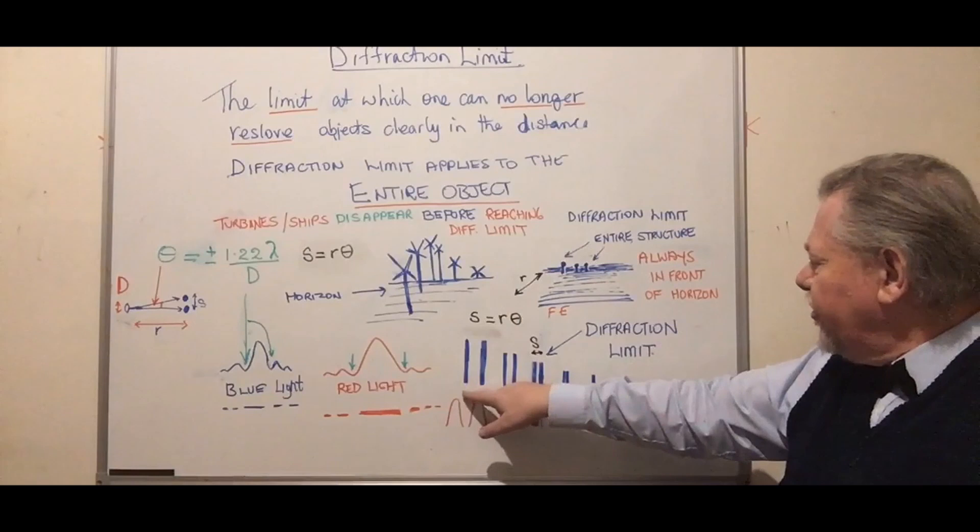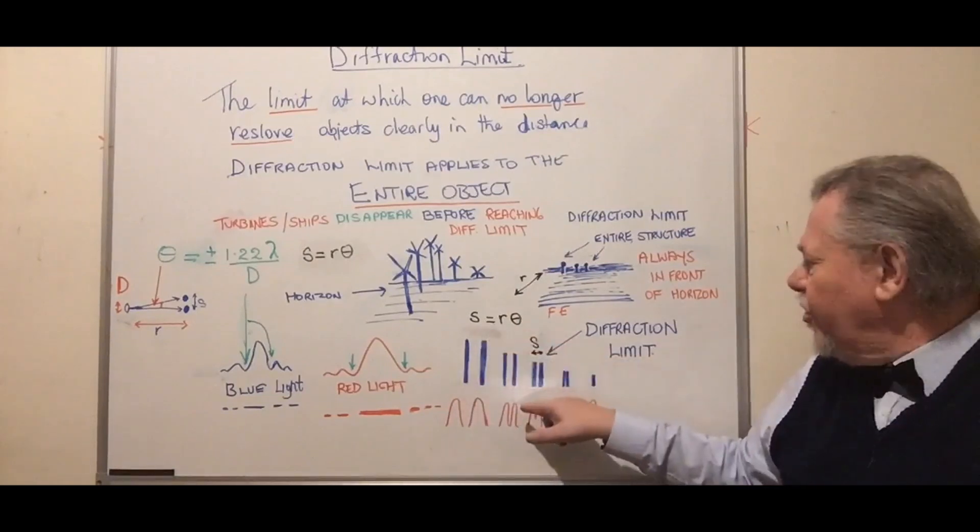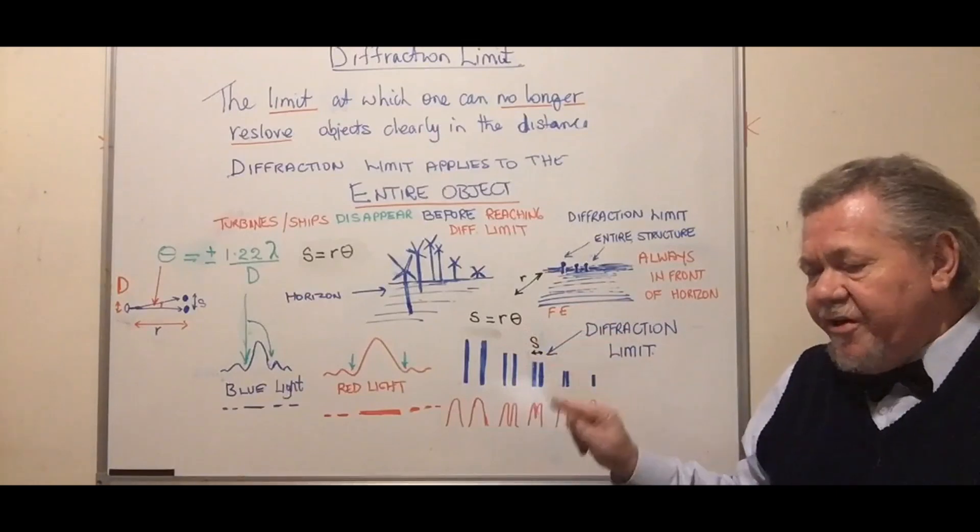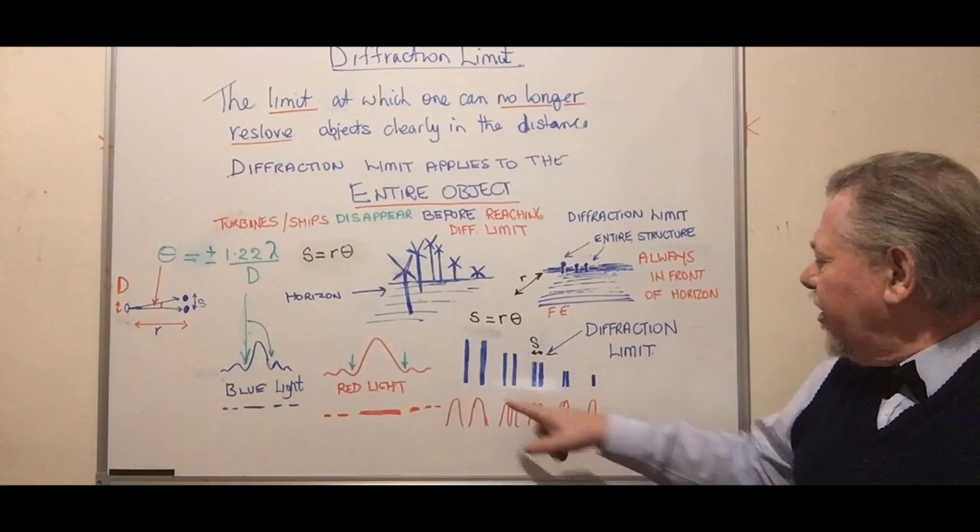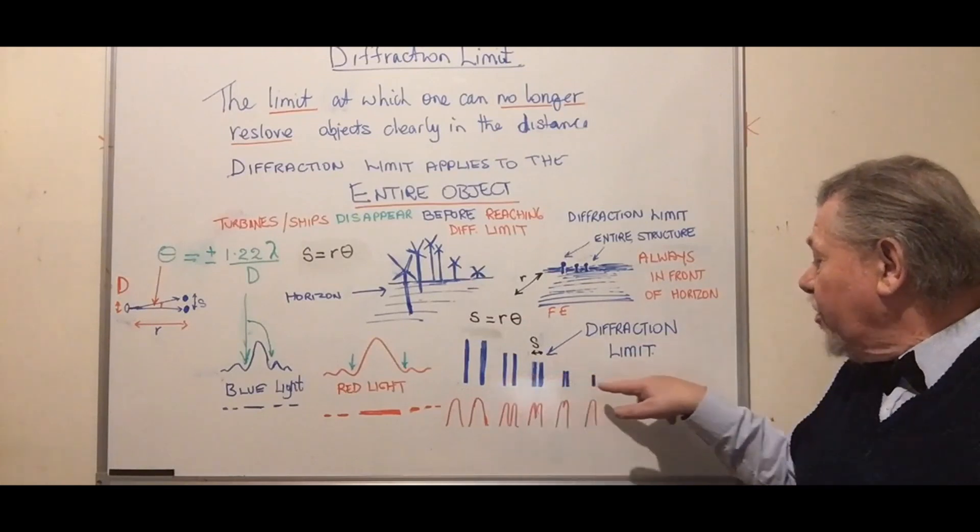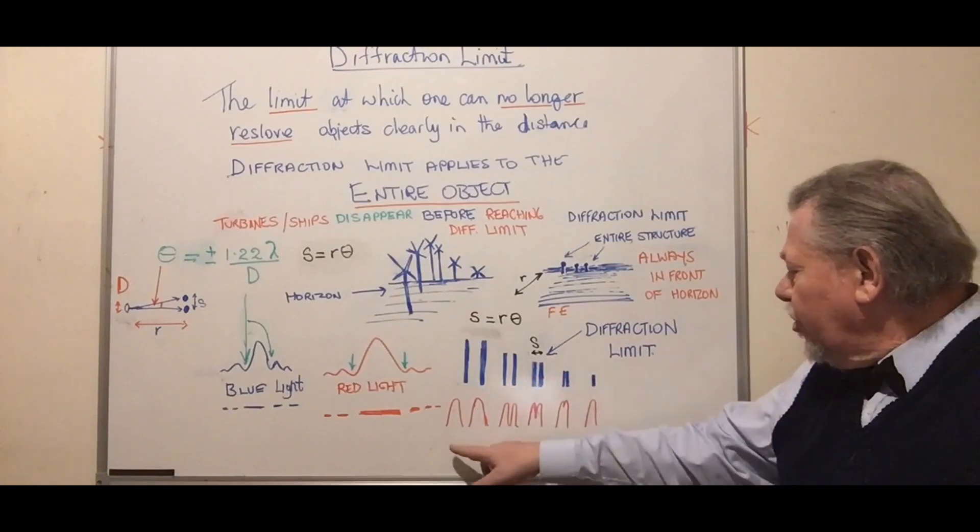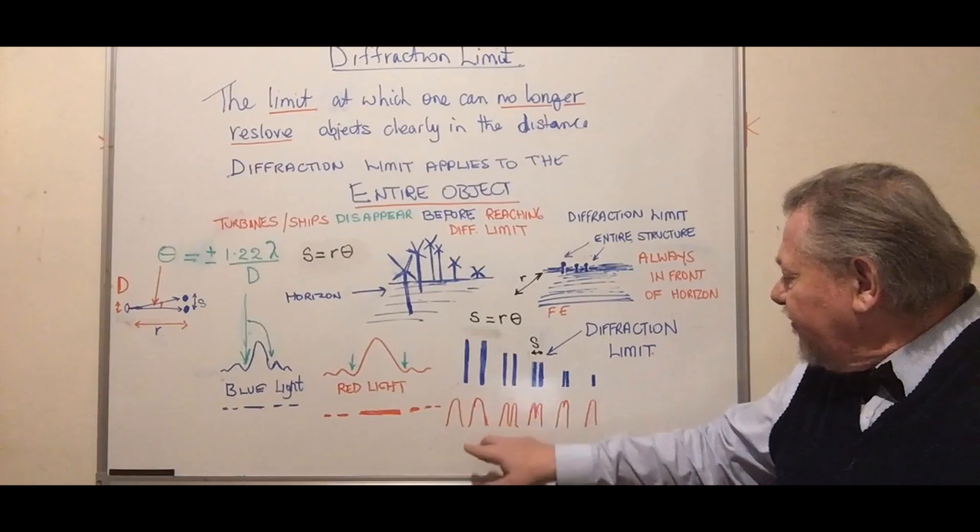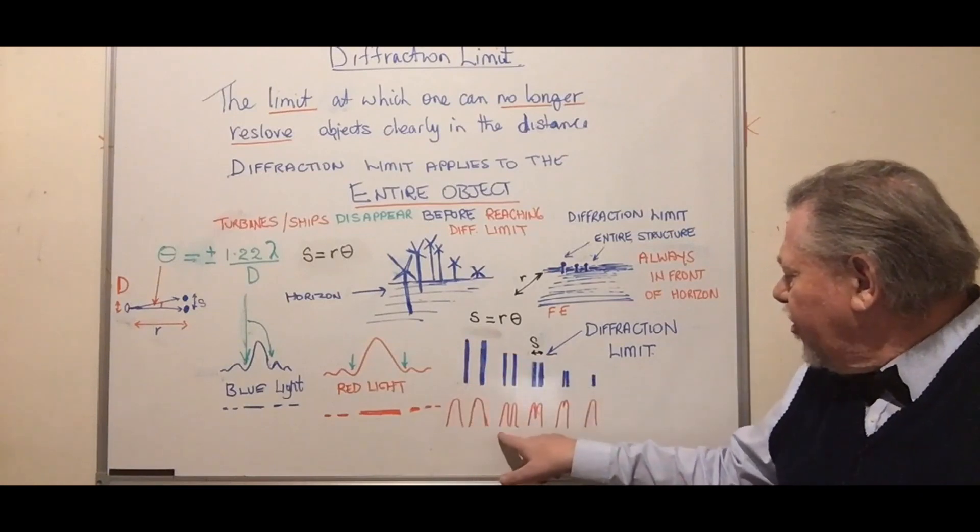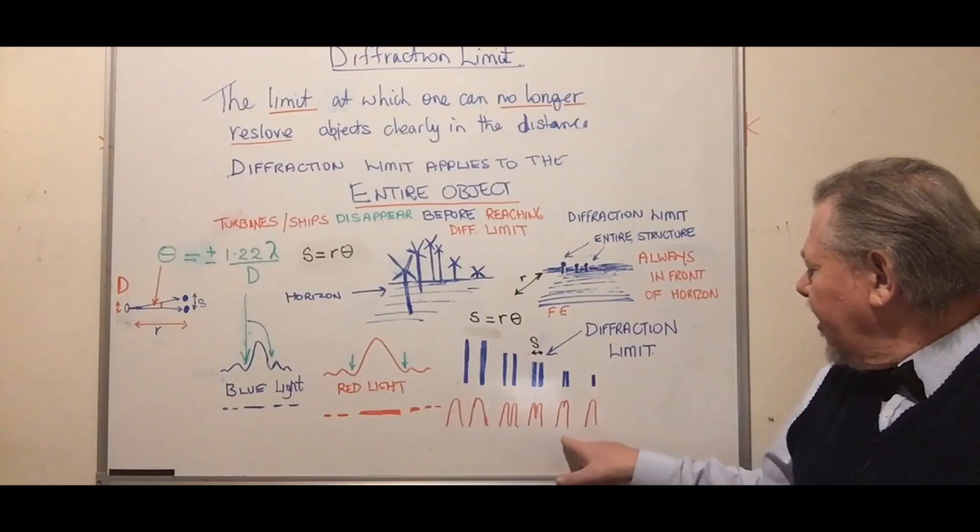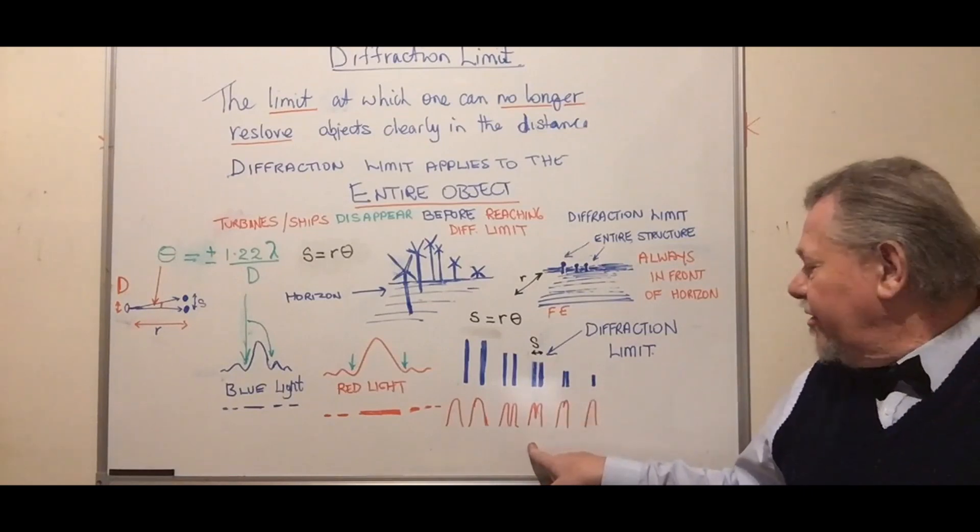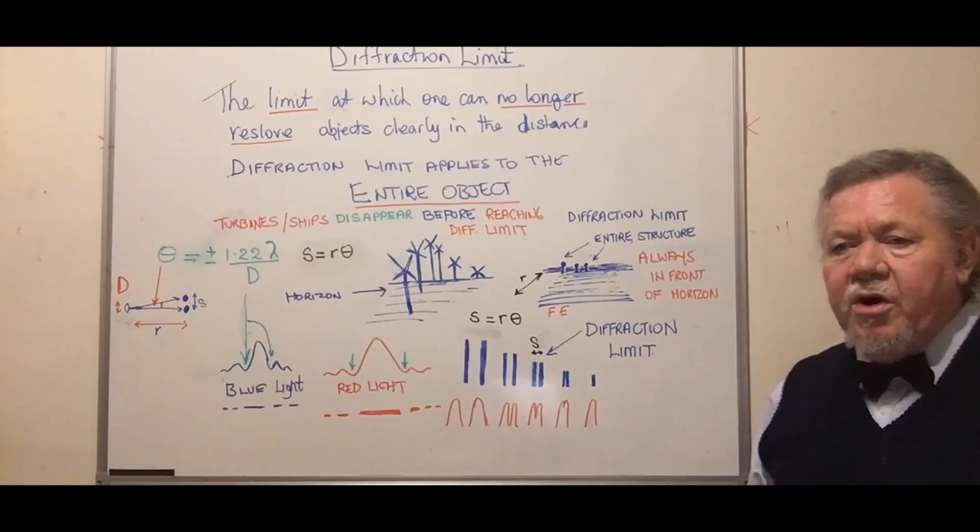Here we've got two objects. S is the distance between the two objects, R is the distance from the observer to the objects, and theta is the angle between them from the observer's perspective. As you get further away, they get closer together and also smaller. Looking at the diffraction pattern, there are two separate peaks representing the two objects. Then closer and closer together until reaching the diffraction limit where you can't tell them apart. Beyond that, they look like one object.